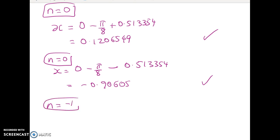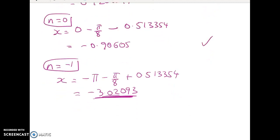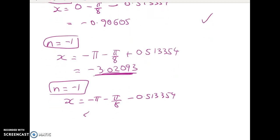So let's now do n equals negative 1. We get x equals negative 1π minus π/8 plus the painful number. And I chuck it into my calculator, and I get negative 3.02093. Now that's getting very, very close to negative π, so that's going to be the bottom one at that end. And then I'm going to check the other one, negative 1. So we've got 2 for each n for cosine, so x equals negative π minus π/8 minus 0.513354. And when I work that out, it was less than negative 3.14, so it's too low. So this one here is in.